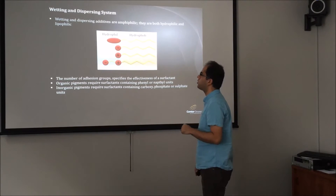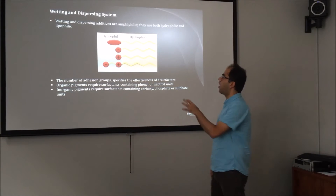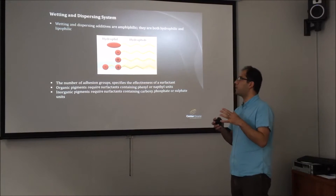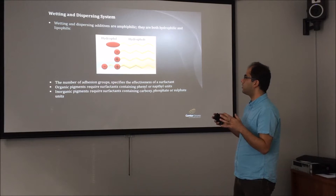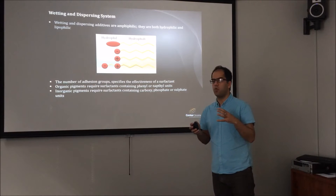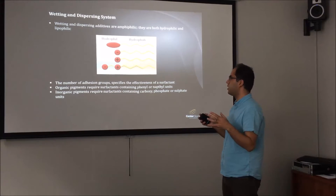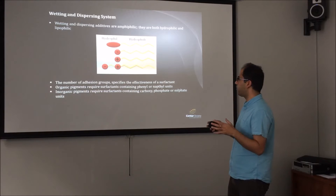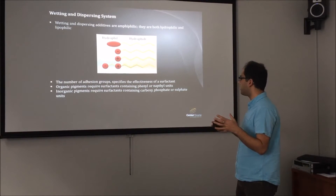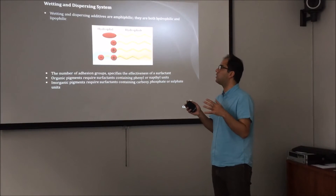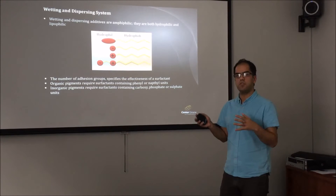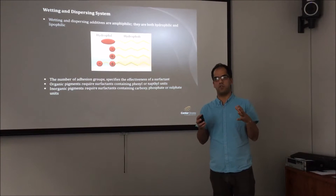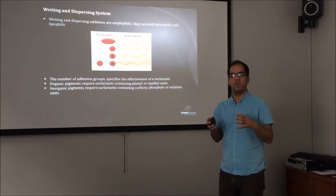This graph shows the structure of a surfactant — it has a hydrophilic head and a hydrophobic tail. The number of active groups on the structure of a surfactant specifies its effectiveness. Some powders and pigments prefer special types of active groups: organic pigments prefer thiols, and inorganic pigments prefer carboxyl, phosphate, or sulfate units. So when selecting a surfactant system, it is important to understand the chemistry and the number of active groups on the surfactant.